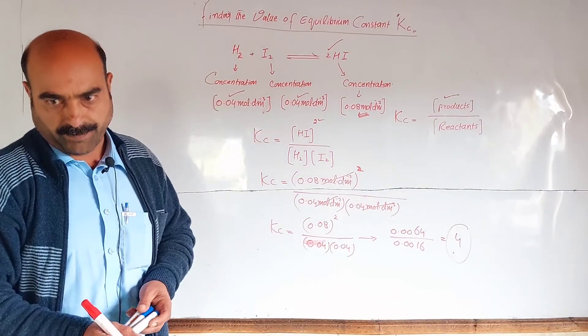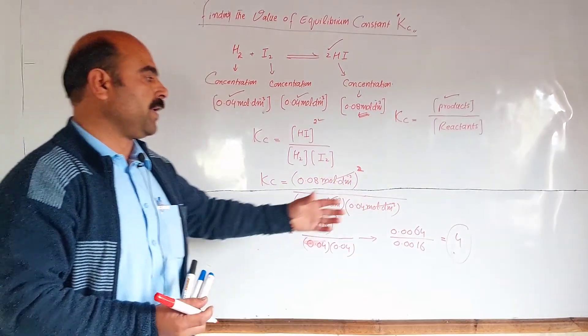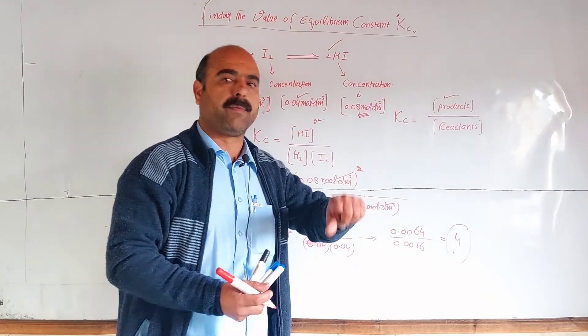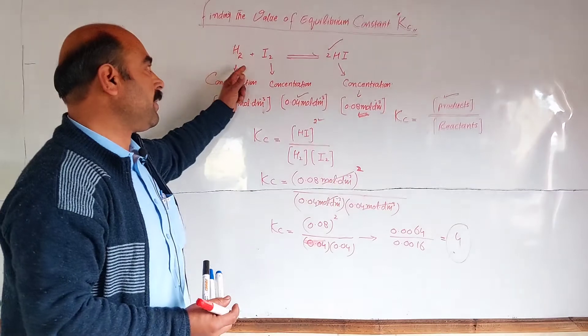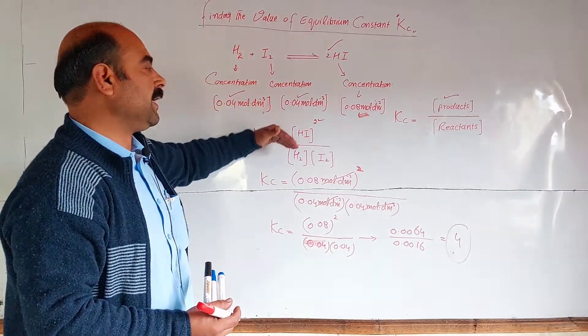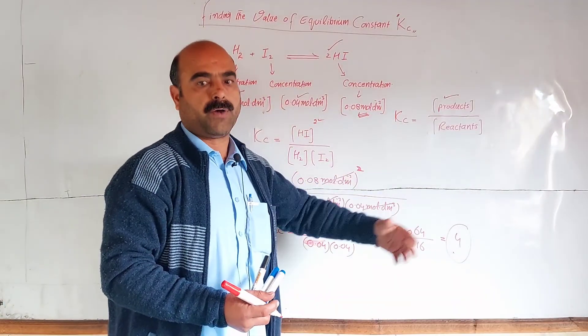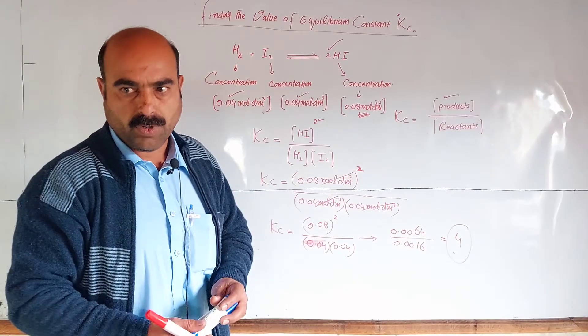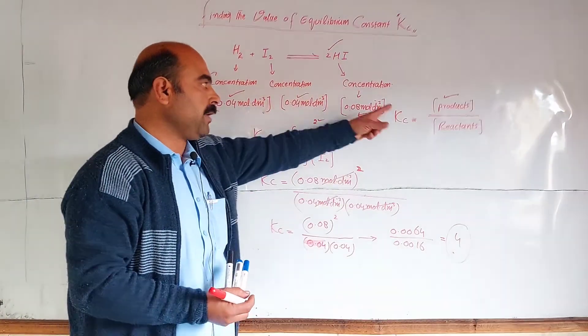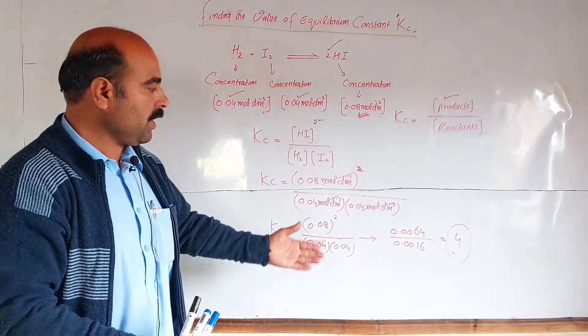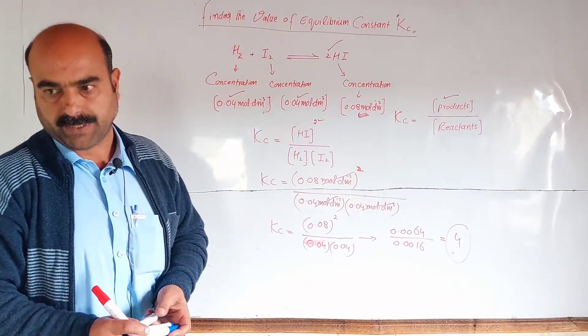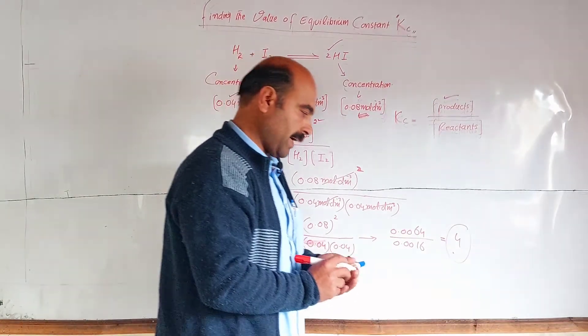The value of Kc is 4. The equilibrium constant value is 4. To find this out, concentrations of each reactant and product are given experimentally. We put the values in the equation. After putting the values and doing the calculation, we can easily find out the value of Kc.